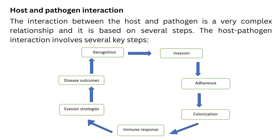Host and pathogen interaction. The interaction between the host and the pathogen is a very complex relationship based on several steps. As you can see in the diagram, the key steps involved in host and pathogen interaction include: recognition, invasion, adherence, colonization, immune response, evasion strategies, and disease outcome.